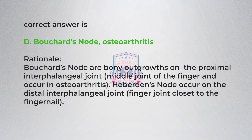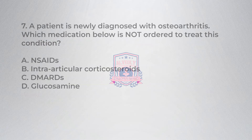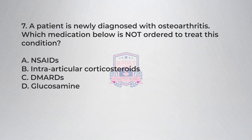Rationale: Bouchard's nodes are bony outgrowths on the proximal interphalangeal joint (middle joint of the finger) and occur in osteoarthritis. Heberden's nodes occur on the distal interphalangeal joint, the finger joint closest to the fingernail.